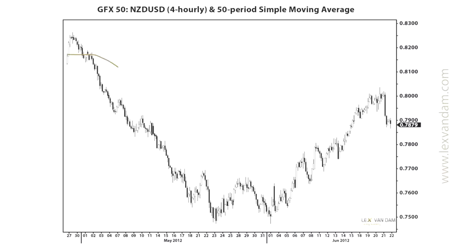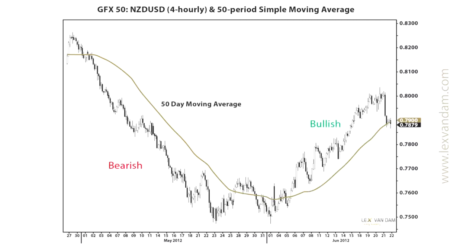Let's have a look at a real-life example. This four-hour chart shows the New Zealand dollar versus the US dollar, as well as its 50-period moving average. When the price is below the moving average, it is considered bearish, and when it is above, it is bullish.